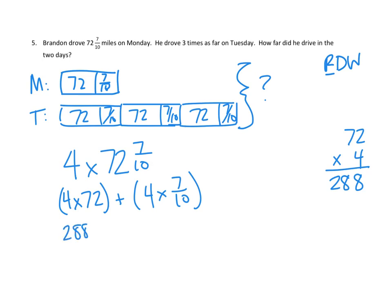So 288 plus, this one's a little easier, 4 times 7 is just 28 tenths. Now, that's an improper fraction. So we know we're going to need to simplify that into a mixed number. So we'll keep our 288 over here and say, how many tenths can we pull out of 28 tenths? Well, 10 tenths would make 1, 20 tenths would make 2. That's all we can pull. We can pull two wholes out. That's 20 of the tenths, and that leaves us with 8 more of our tenths. And now we can add those two together. That's 290 and 8 tenths.